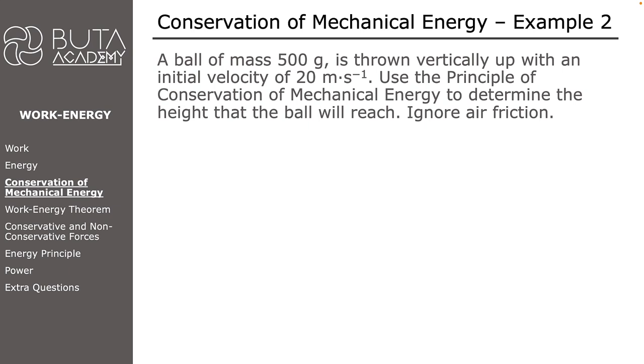In the second example, a ball of mass 500 g is thrown vertically up with an initial velocity of 20 m per second. Use the principle of conservation of mechanical energy to determine the height that the ball will reach. Ignore air friction.